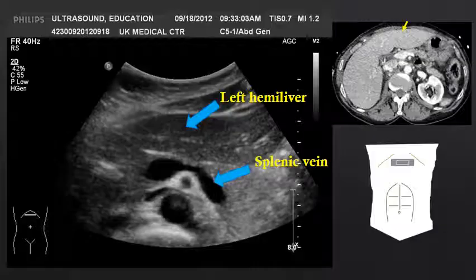Deep to the left hemiliver, we can see the portosplenic venous system, with the splenic vein highlighted with the blue arrow and then the yellow arrow on the CT. We also see the aorta deep to the portosplenic system, which can also be readily identified on CT.